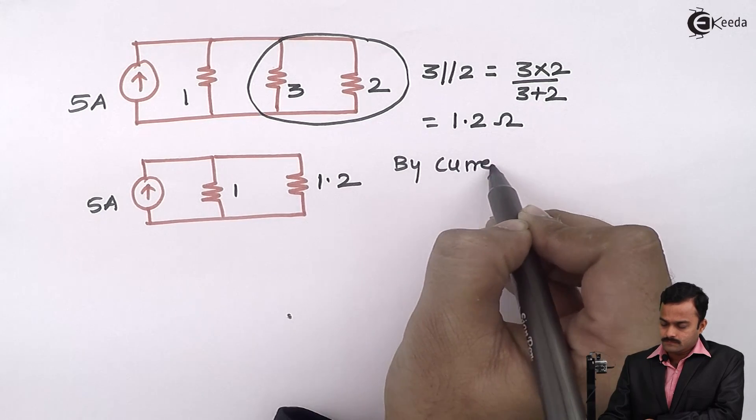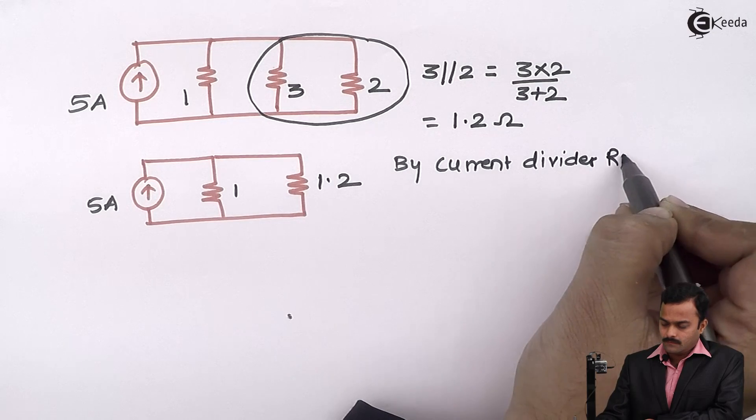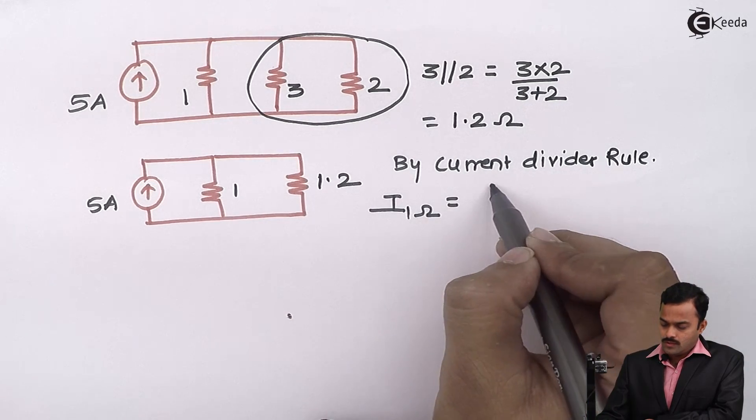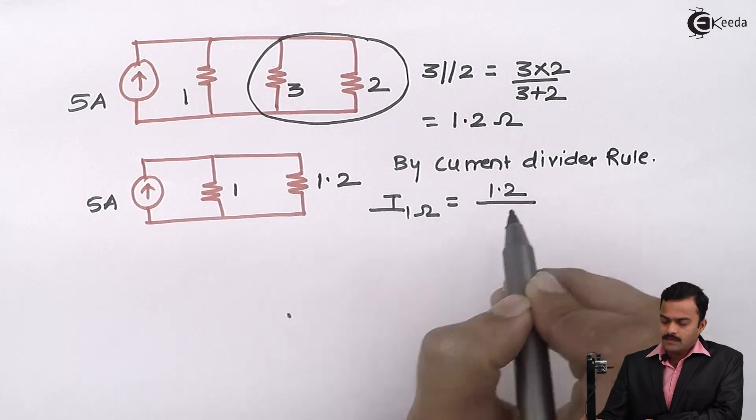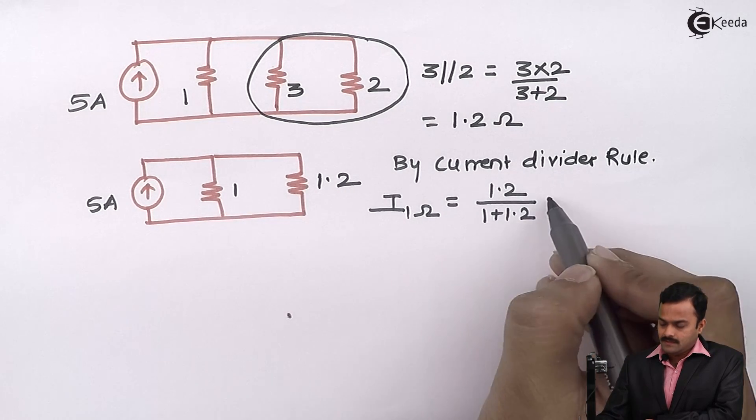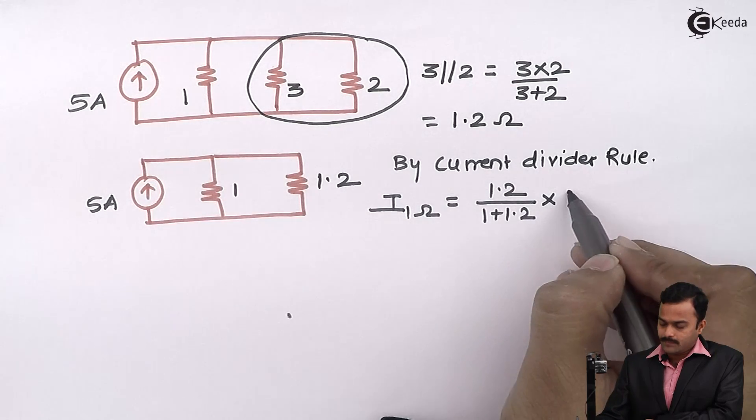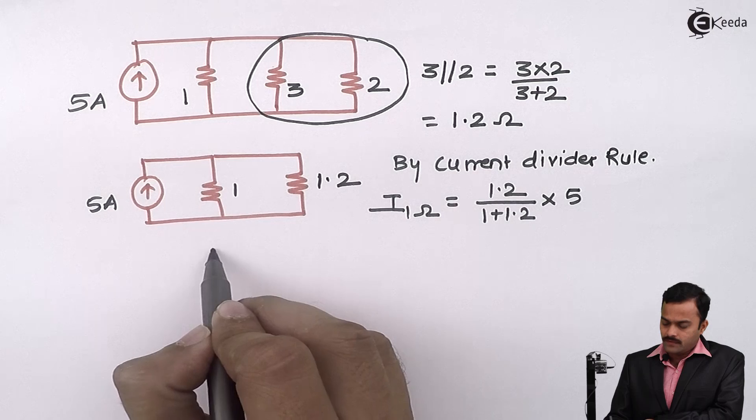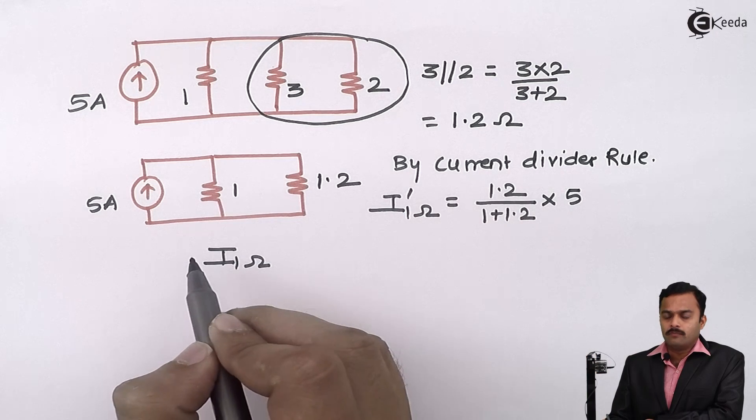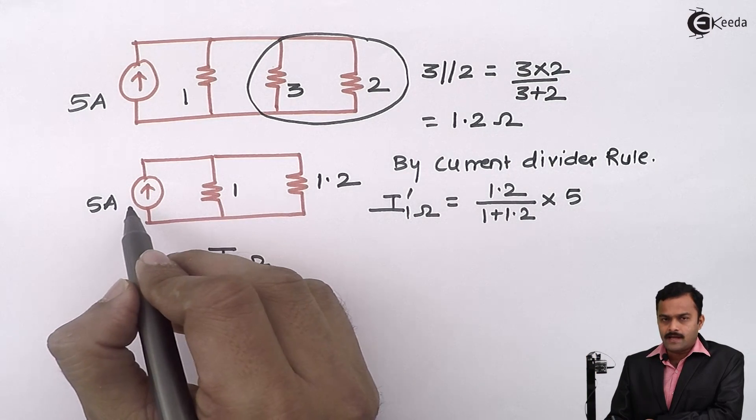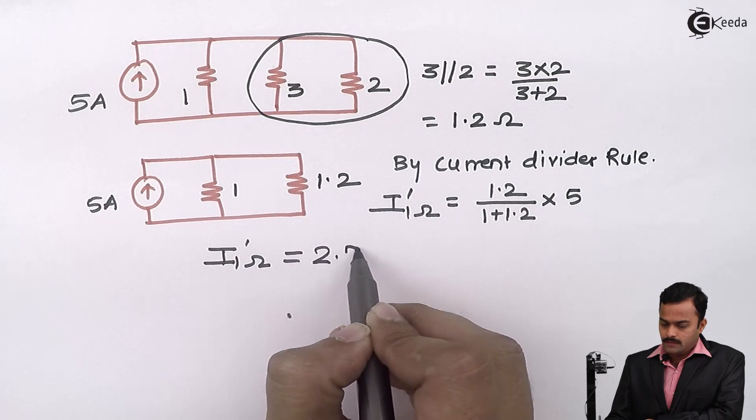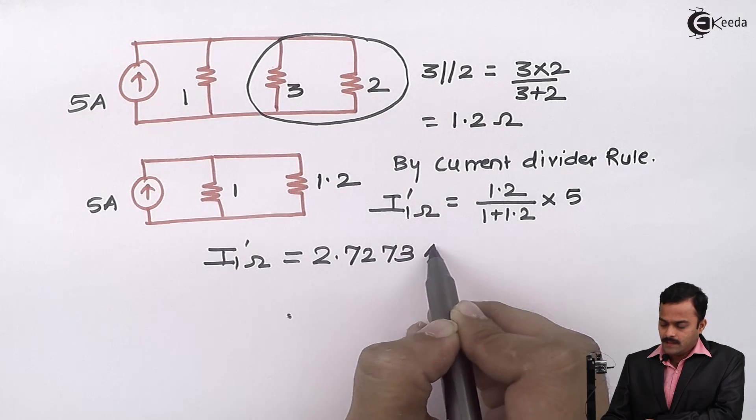By current divider rule, I can say current flowing through 1 ohm resistance equal to the resistance which is connected to 1 divided by addition of both the resistances multiplied by total current supplied which is 5 in this case. If I solve, I will get I dash 1 ohm because this is only considering 5 ampere acting alone.